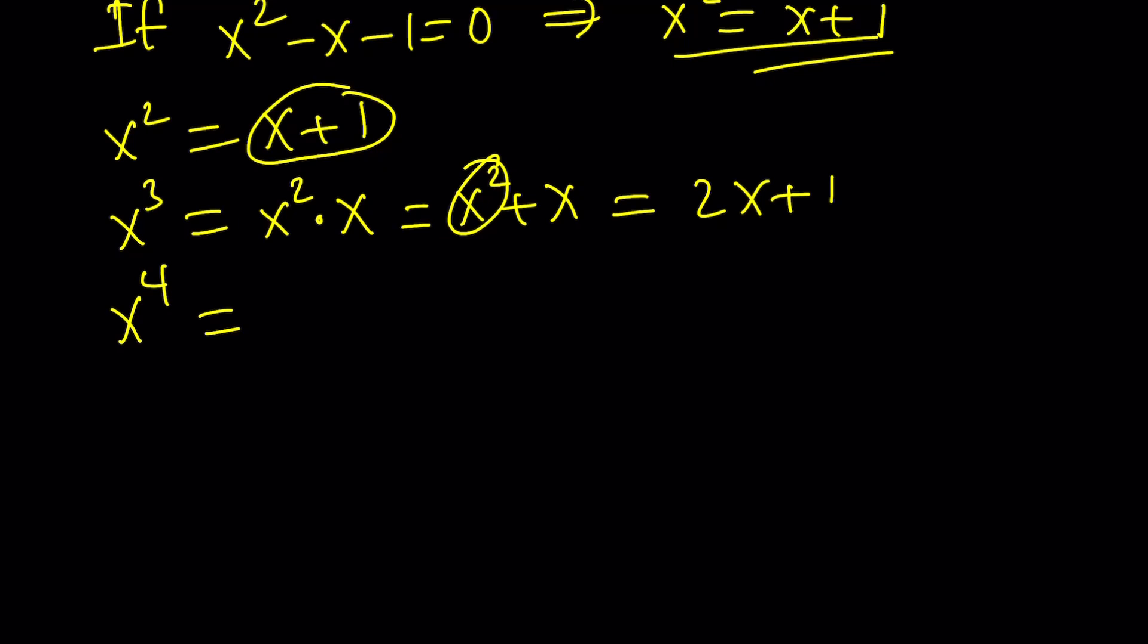x to the 4th power is x cubed times x. x cubed is here. Multiply by x. And x squared is x plus 1. You're going to get 3x plus 2.